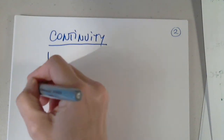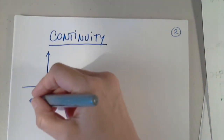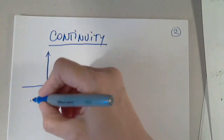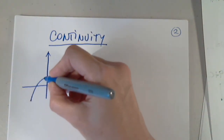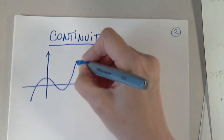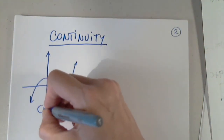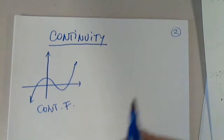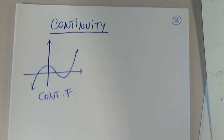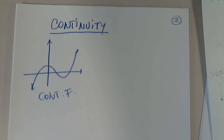So let's talk about continuity. Look — I start with my marker, I finish the graph, and now I lift the marker off the paper. This is a continuous function. Why? Because I was able to graph the entire graph without lifting the pen off the paper.